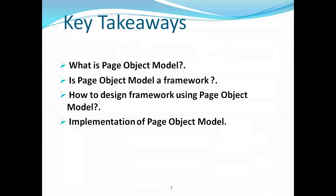Object repository is a place or storage that holds all your element locators. We've seen in previous sessions that object repository can be implemented through a properties file or an XML file. Other approaches include Page Object Model, Page Factory, storing elements in an Excel sheet, or in a database. POM is used as an object repository — it's a design approach, not a standalone framework.